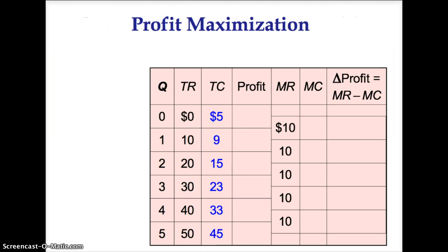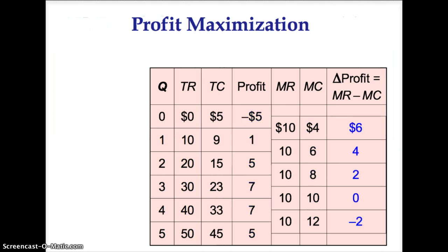Remember, price and marginal revenue are the same for perfectly competitive firms. Since marginal revenue equals 10, the price must also equal 10. At any quantity with marginal revenue greater than marginal cost, increasing quantity will raise the profits of the firm.